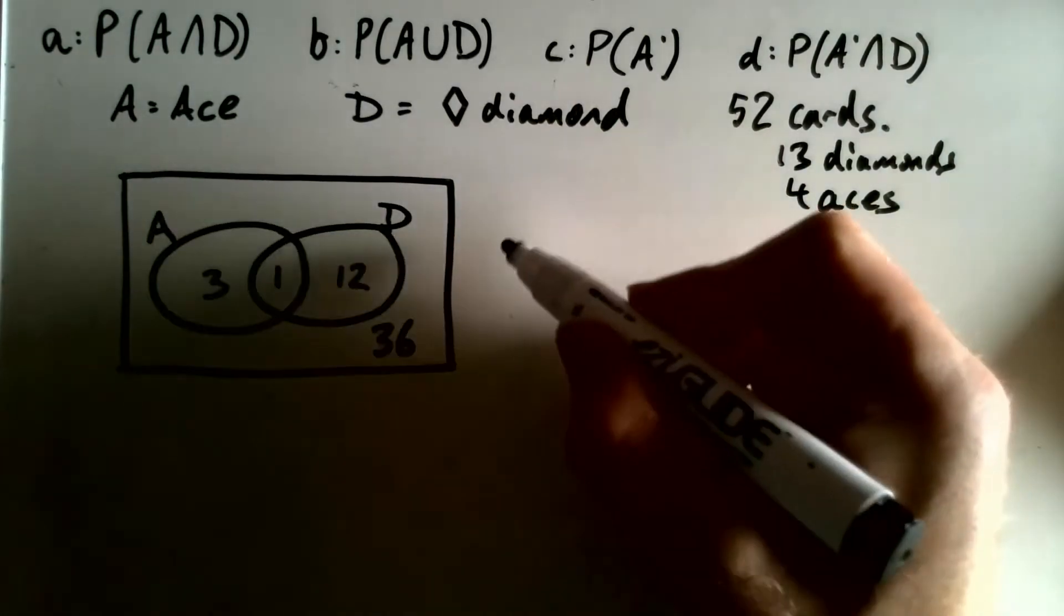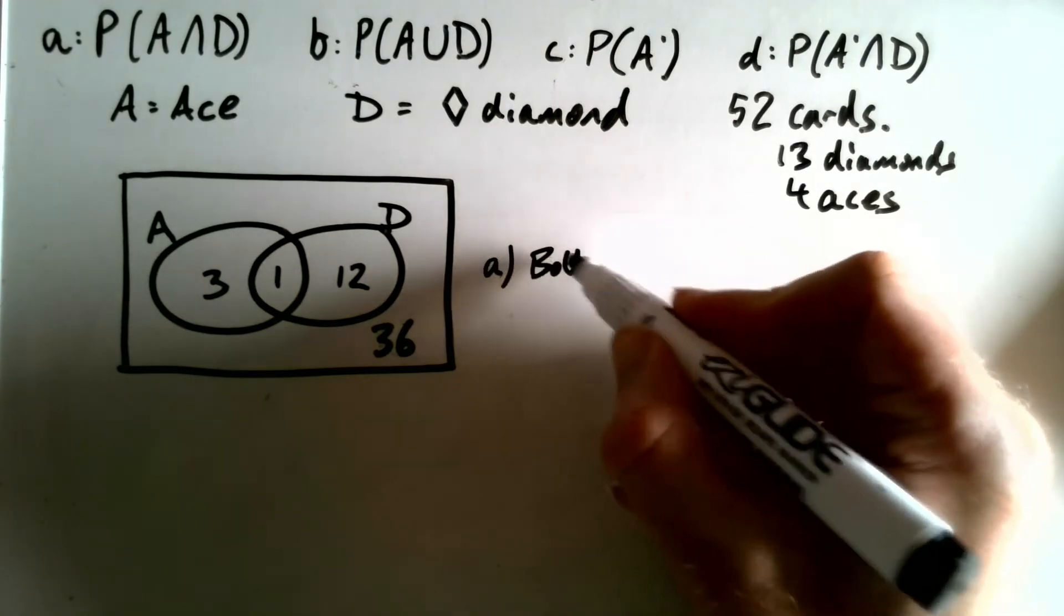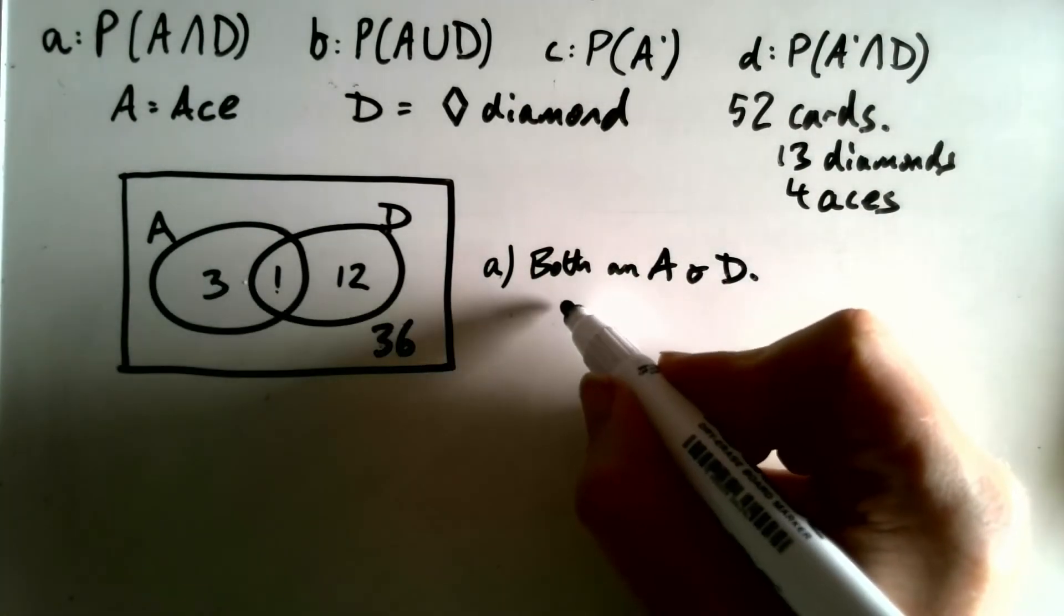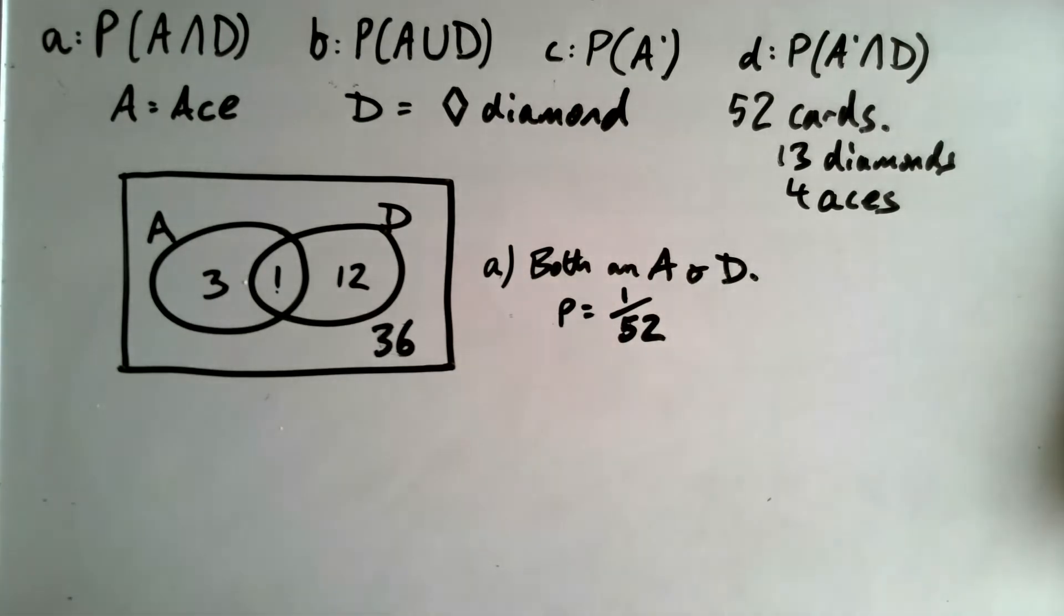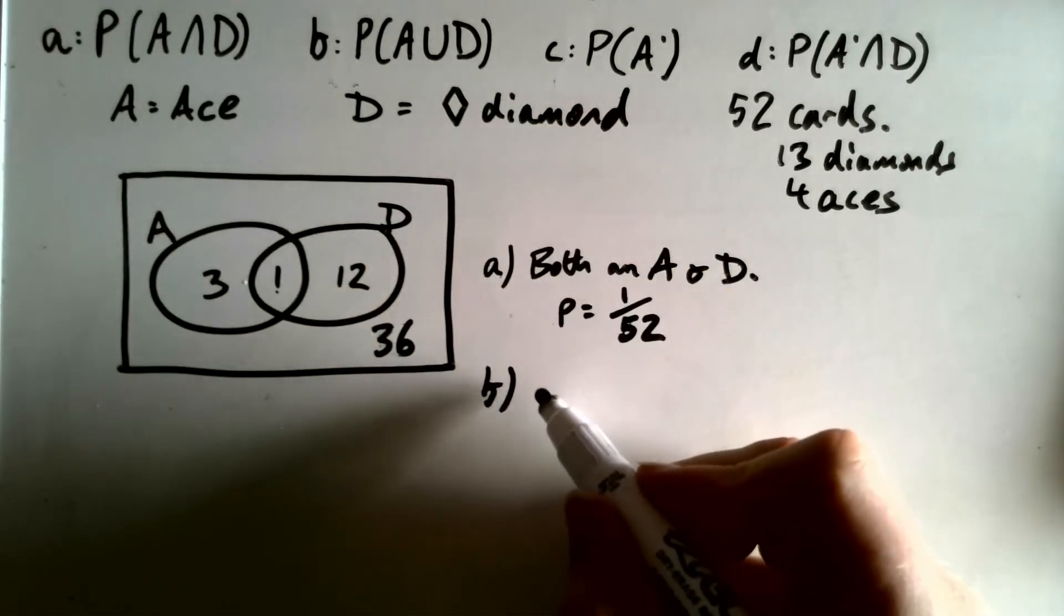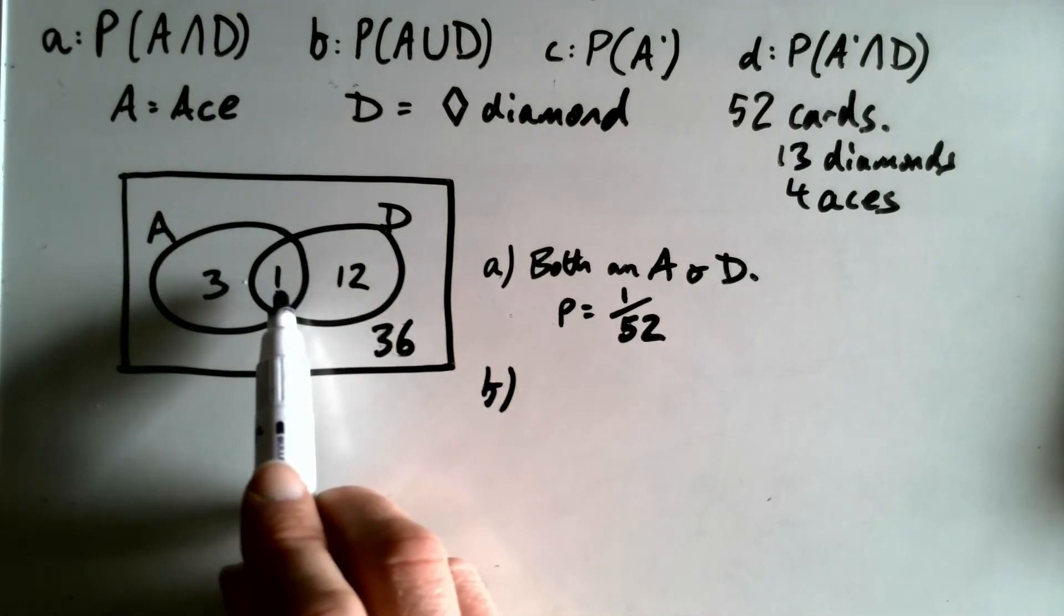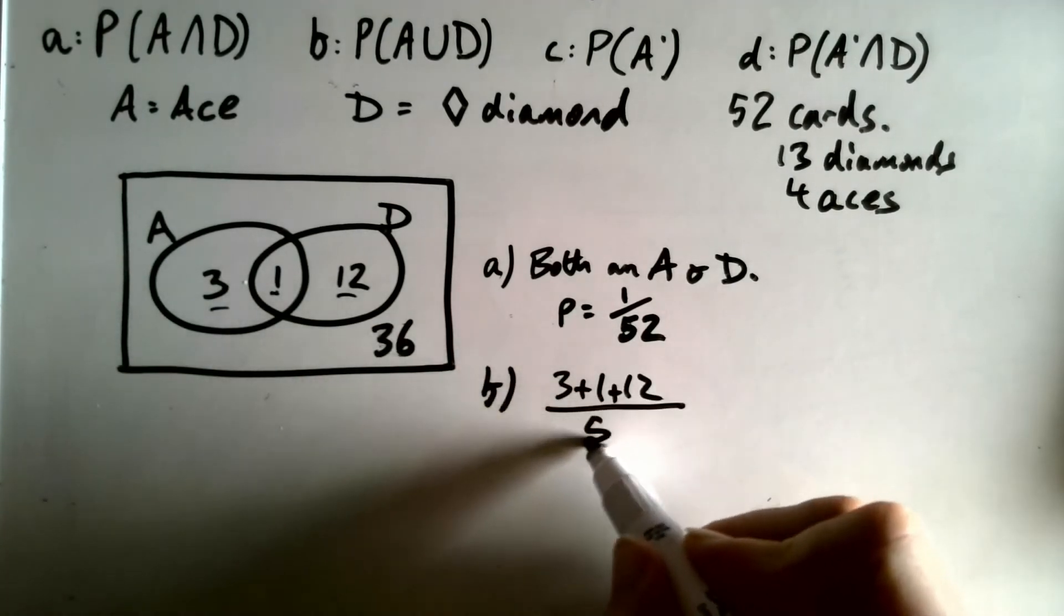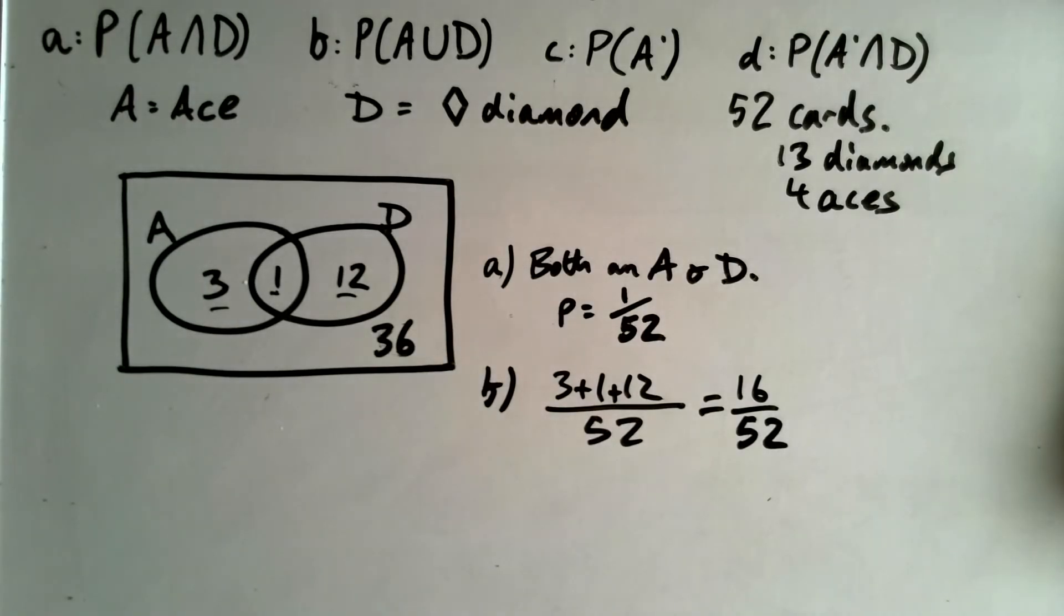Right, now let's start working out our different probabilities. So A is the probability that it's A intersection diamond. So both an ace and a diamond. So we are looking at just that one card of an ace of diamonds. So the probability is going to be 1 out of 52. Second scenario, A union D means it could be an ace, it could be a diamond, it could be an ace and a diamond. All of those things we're going to be happy with. So it's going to be 3 plus 1 plus 12 all out of 52, which is 16 out of 52. You don't need to simplify unless you're asked to.